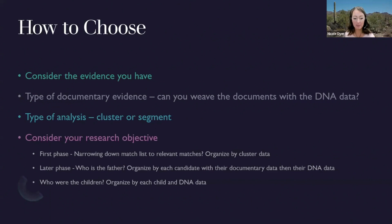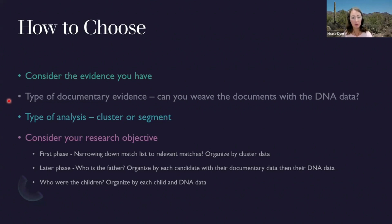How do we know which method will work for our evidence? We have to think about what type of documentary evidence we have — do we have a lot or a little? Is it strong or weak, indirect or direct? Can we weave the documents with the DNA data? This is probably the preferred method, to avoid jumping back and forth between different people and time periods — instead having one section that talks about the people and the DNA data all at once.